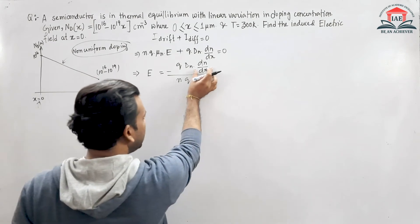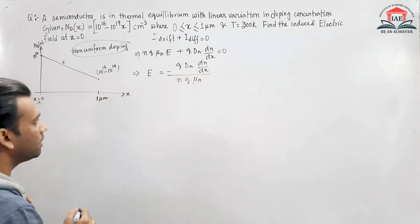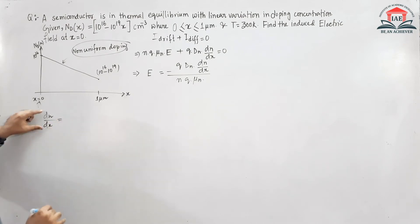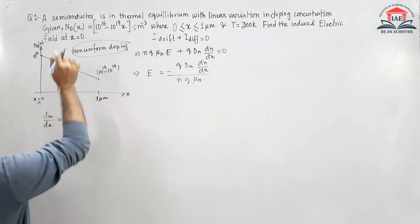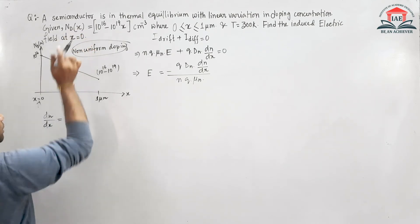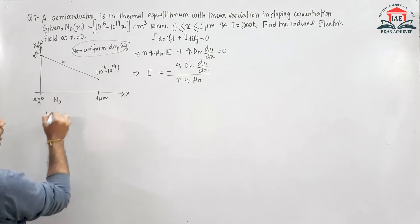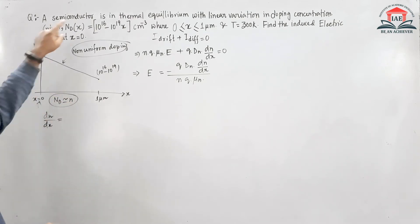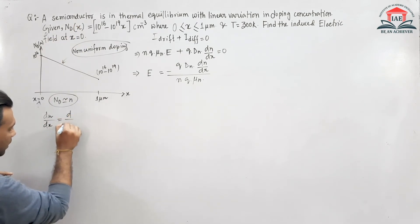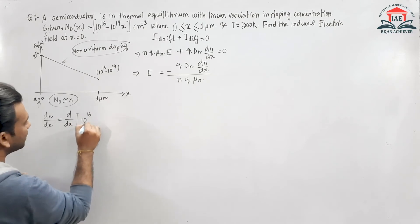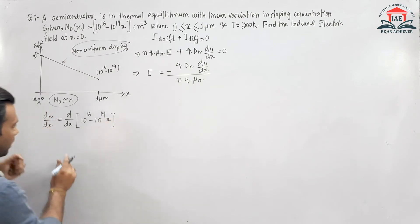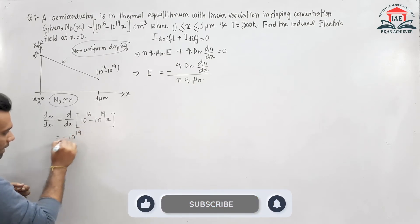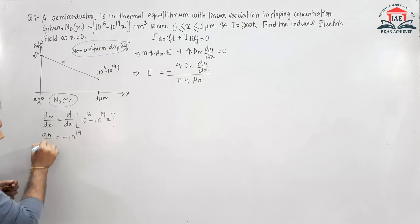We need the concentration gradient dn/dx. For donor doping, Nd ≈ N, so we differentiate Nd(x) = 10^16 - 10^19 * x. The derivative gives dn/dx = -10^19. This is the value of dn/dx.